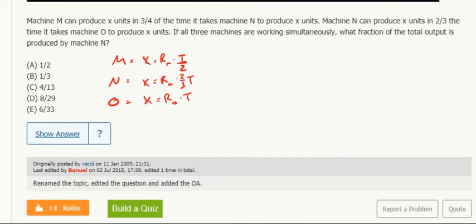So that's t over 2. I need to solve for each rate. Rate of M is 2x over t, rate of N is 3x over 2t, and the rate of O is x over t.